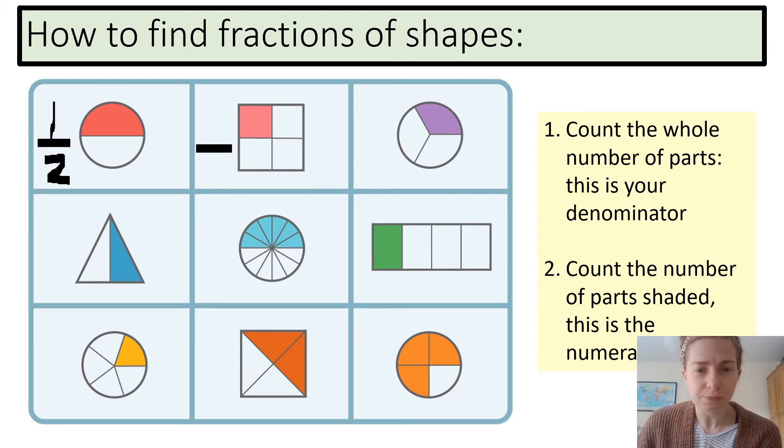Now, let's go on to my square. I have one, two, three, four parts, so I write that as my denominator. How many are shaded? One, so I write that as my numerator. Again, this is an example of a unit fraction, because one is my numerator.